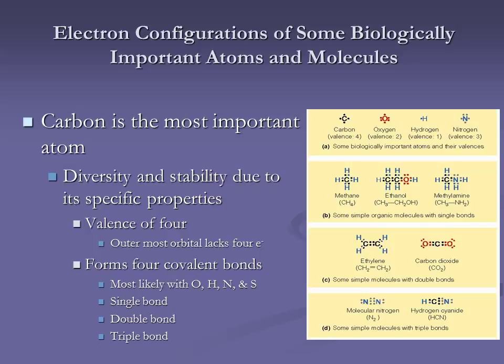One of the reasons why carbon is so useful as the foundation of our organic molecules is because carbon has a valence of four. That means it needs four electrons for that outermost shell. So with a valence of four, carbon can share electrons with four other atoms.